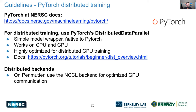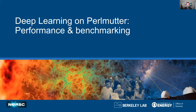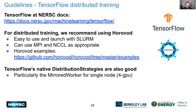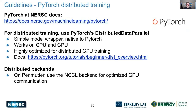For framework-specific recommendations: with PyTorch distributed training, we recommend using the DistributedDataParallel utility in the native PyTorch distributed library, and using the NCCL backend for optimized GPU communication. For TensorFlow distributed training, we recommend Uber's Horovod library — it's just really easy to use and launch with Slurm. TensorFlow also has native distribution strategies that are also good; in particular the mirrored strategy works well for filling up a single node.